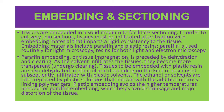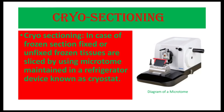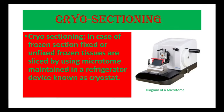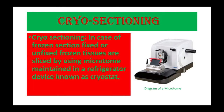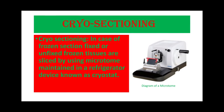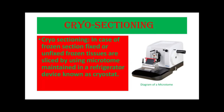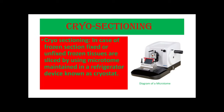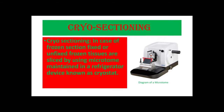The next stage is cryo sectioning. In the case of frozen sections, fixed or unfixed frozen tissues are sliced using a microtome maintained in a refrigerator device known as the cryostat. A diagram of the microtome used in tissue preparation is shown here.